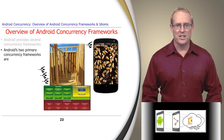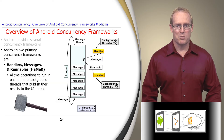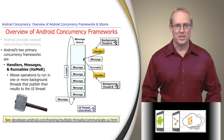Android has two primary concurrency frameworks. One framework consists of handlers, messages, and runnables, which we call the HaMeR framework. This provides a loosely connected set of classes that allow long-duration operations to run in one or more background threads and then publish the results of these operations to the user interface thread, as shown by our image downloading application outlined earlier.